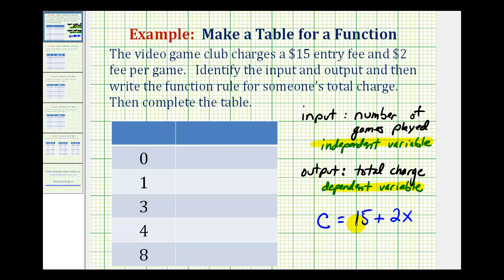And because this rule does satisfy the definition of a function, that each input has exactly one output, we can rewrite this using function notation. So we could write C of X equals 15 plus 2X.